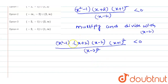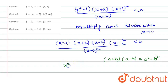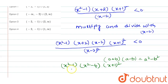We can see that this expression is in the form of (a + b)(a - b) = a² - b². So we get (x² - 1)(x² - 4)(x + 1)² / (x - 2)² is less than 0.